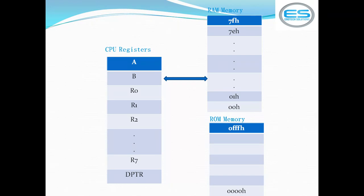There are 4 kilobytes of ROM memory from the 8051 family, with addresses from 0 to 4095, written in hexadecimal as 000H to 0FFFH. The addressing modes help to do operations between registers, between memory locations, registers to memory locations, and memory locations to registers. All these different operations you can perform by using standard addressing modes.